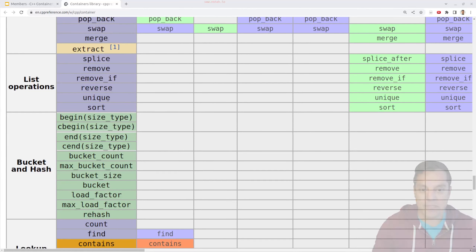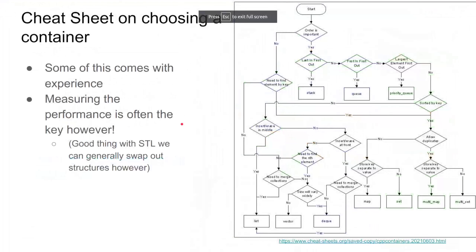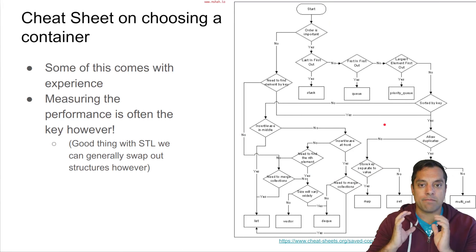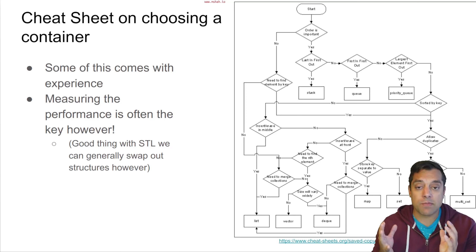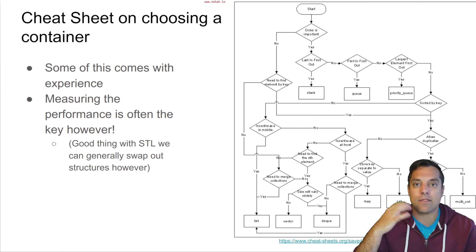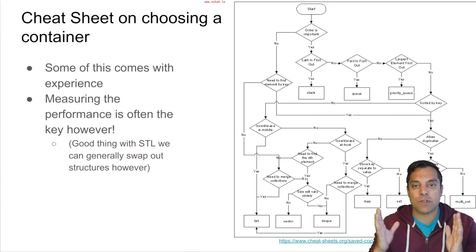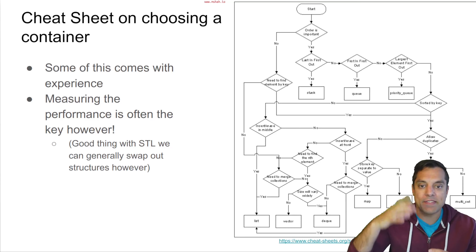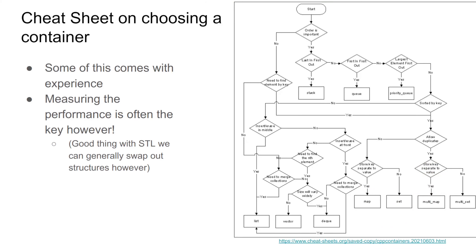Something else I found useful is trying to make a decision about which data structure to use. These are the types of things that come from studying data structures and gaining experience with them — you'll develop an intuition about which data structure solves the exact problem you're trying to solve. For example, where to use a vector versus an array, or a deque versus a vector. There's a flowchart cheat sheet available that I thought was a pretty decent roadmap for making a data structure decision, though these things tend to come with experience.